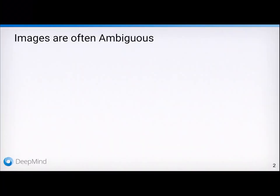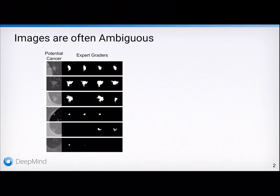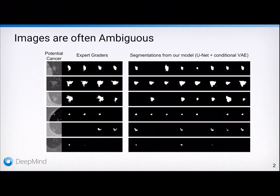Images are often ambiguous, particularly medical images. On the left you see CT scans showing potential lung abnormalities. To the right thereof, there are annotations produced by four independent expert graders. Evidently, they vary significantly and this work seeks to model distributions of plausible segmentations given an image, which you can see on the right here.